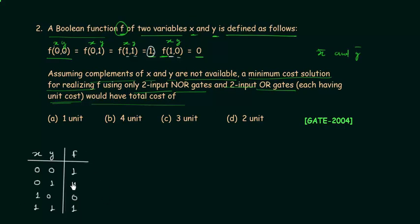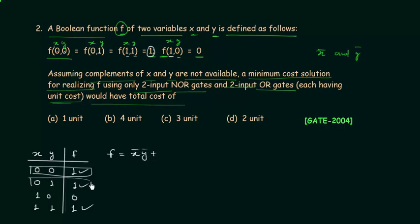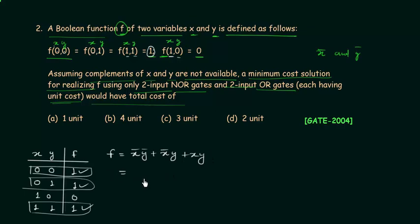Now we will use this truth table to find out the logical expression of f. f is high for three cases. For the first case, x is 0 and y is 0, so I will write x complement y complement. For the second case, x is 0 and y is 1, so I will write x complement y. And for the last case, both x and y are 1, so we have x y. Now we will minimize it using Boolean algebra.